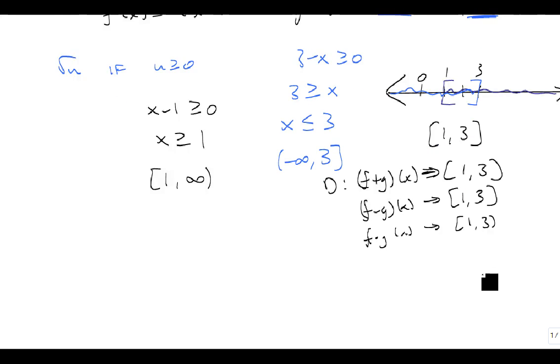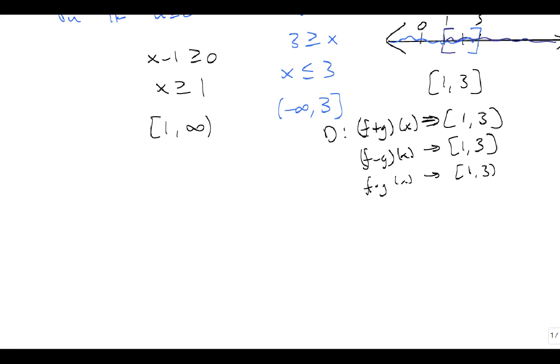The only one that takes any special consideration is f divided by g of x. Because remember, we can't have a 0 on the bottom. And so we go back to here and we change it. Instead of being 3 minus x is greater than or equal to 0, it's got to be strictly greater than 0. It can't be equal to 0. So 3 is greater than x, or x is less than 3, which changes to minus infinity to 3 with a parenthesis.